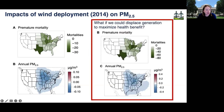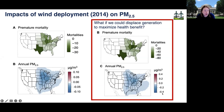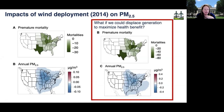We asked: what if we could actually displace generation to maximize health benefit? The patterns look very similar, but the magnitudes are a lot greater. The declines in annual PM2.5 are about 0.4 micrograms per cubic meter as opposed to 0.1, and the mortality scale saturates at 80 rather than 30. This suggests there's a lot of potential for different kinds of interventions that take into account the complexity of the energy system.